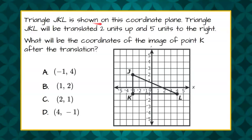Triangle JKL is shown on this coordinate plane. Triangle JKL will be translated two units up and five units to the right. What will be the coordinates of the image of point K after the translation?